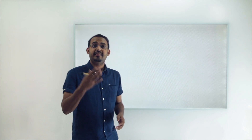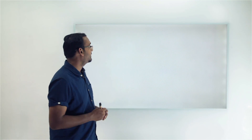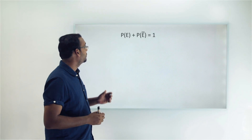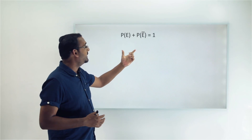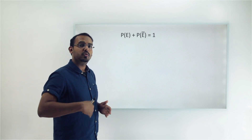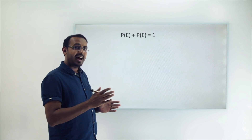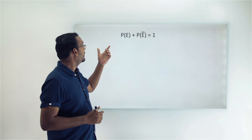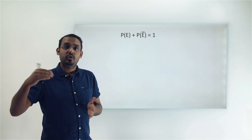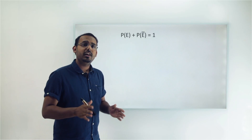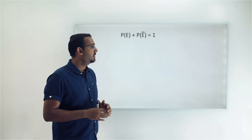The second interesting property is that for any event E in any experiment, the probability of E occurring plus the probability of E not occurring always equals 1. No matter what the experiment or the event, the sum of these two probabilities is always 1. Let's prove this using a generic experiment.